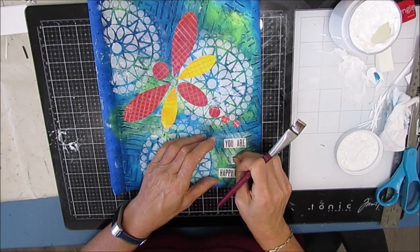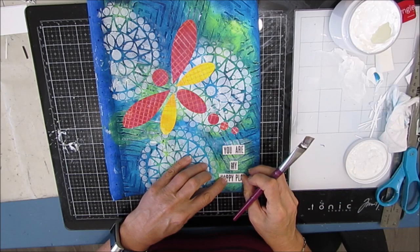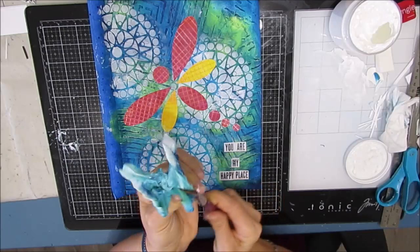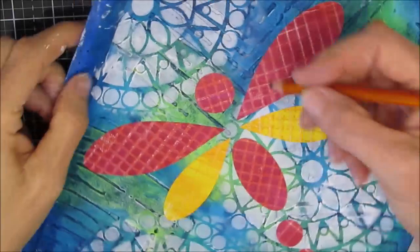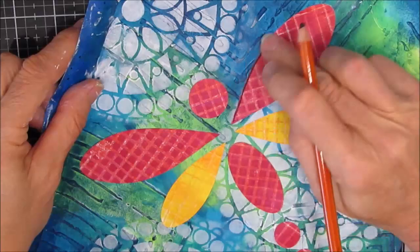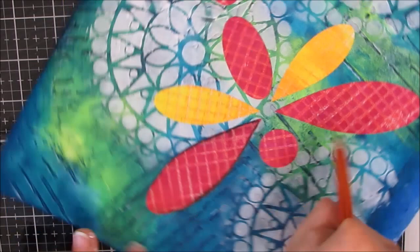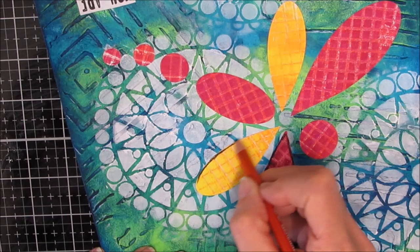You want your elements, your focal image, your background, different things to speak to each other. There's got to be a reason they're together. Then I cut out a sentiment from my sentiment pack number three that says you are my happy place. My happy place is either outside in my garden or in my art studio. And on this page, I brought both.